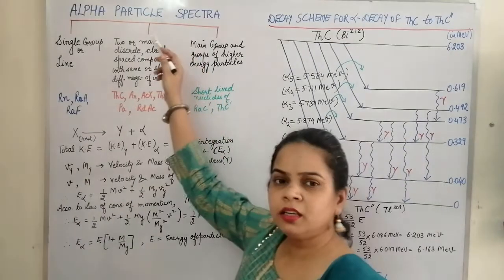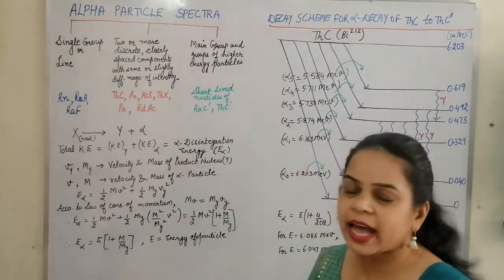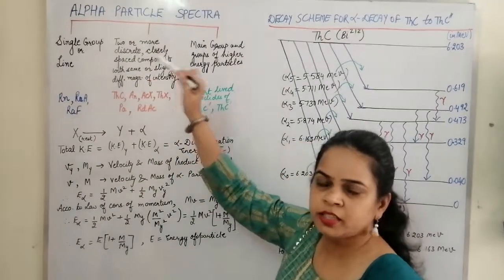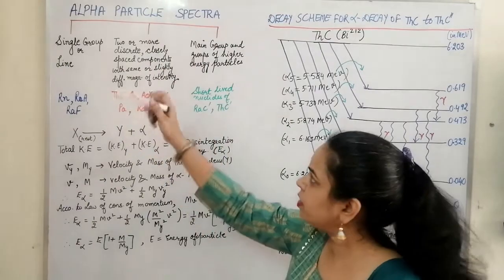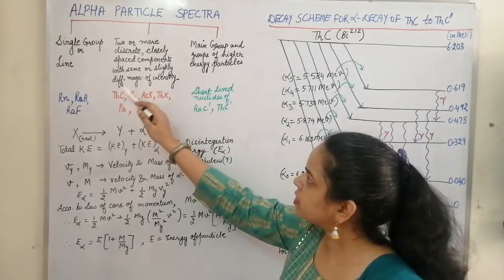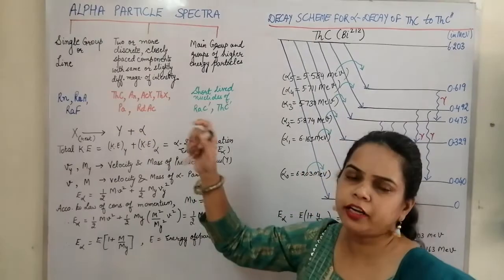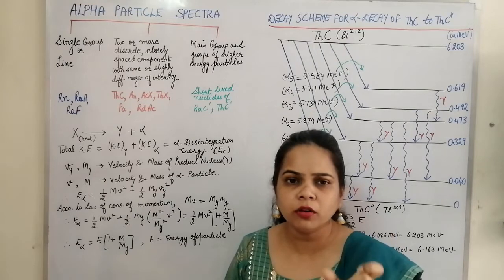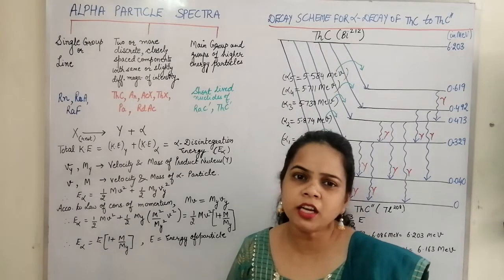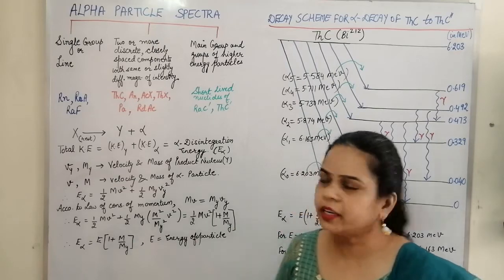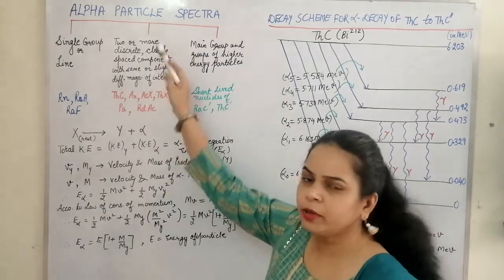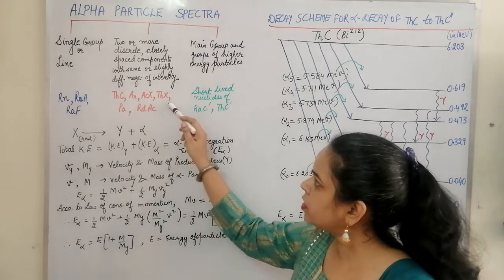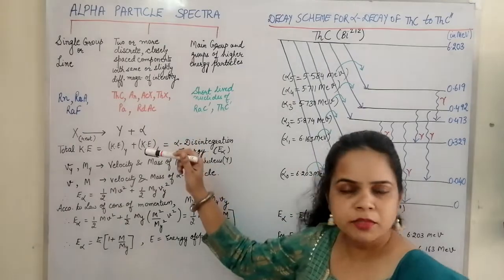The second type of alpha particle spectra consisted of two or more discrete components — meaning they had two energy levels — closely spaced components with the same or slightly different magnitude of intensity. The examples of this type of spectra were thorium C, actinium X, thorium X, palladium, and the radium actinium series.